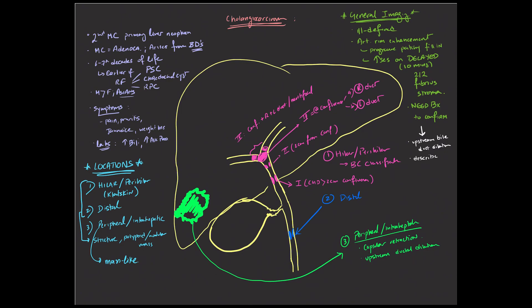And whenever possible, it's important to try to describe the relationship of this mass to the adjacent vasculature, namely the portal veins, hepatic veins, and the hepatic arteries. And then look for metastatic disease. Lymphadenopathy is something that's often seen in these patients, particularly in the hilar region. And with more advanced disease, some carcinomatosis can also be seen with patients with cholangiocarcinoma.